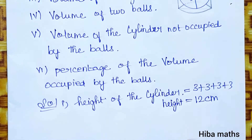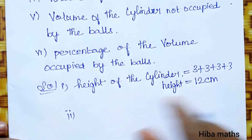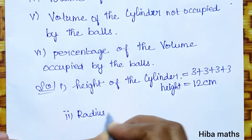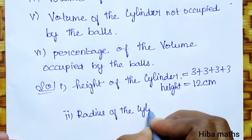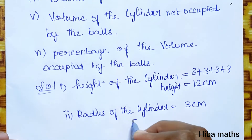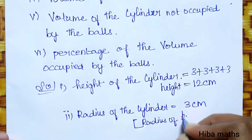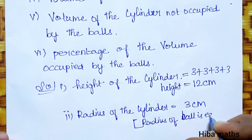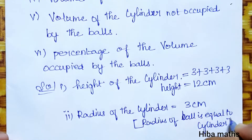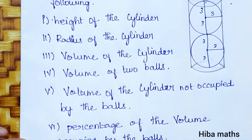Second question: radius of the cylinder. That is equal to 3 cm, because the radius of the ball is equal to the radius of the cylinder. That equals 3 cm. Height of the cylinder is equal to 12 cm.